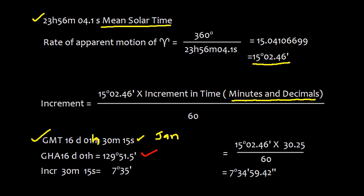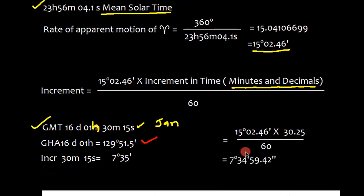The time here is 30 minutes and 15 seconds which if we convert into decimal it becomes 30.25 divided by 60, then we get 7 degrees 34 minutes 59.42 seconds or round off is 7 degrees 35 minutes.